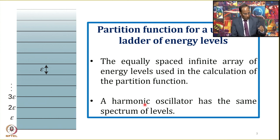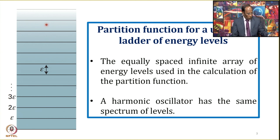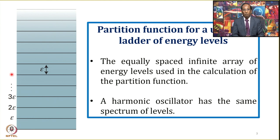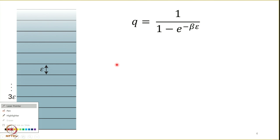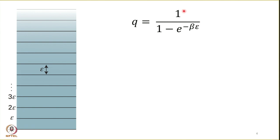A harmonic oscillator has energy levels in the form of a uniform ladder: 0, E, 2E, 3E, etc. We are going to discuss how to obtain an expression for the molecular partition function for a uniform ladder of energy levels, and how the population of each state changes when temperature is varied. We will show that the partition function is going to be 1 over (1 minus exp(−βE)).